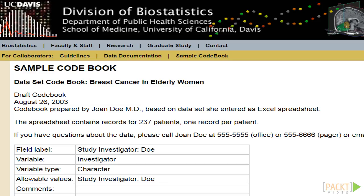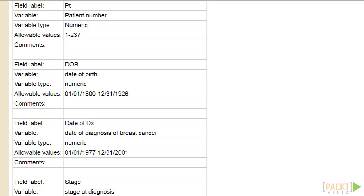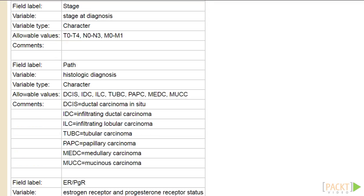The University of California Biostatistics Division have published this sample codebook. It may be a sample, but it does give a very good example of what to expect. It is headed up as a study of breast cancer in elderly women. From the metadata, I can see that the allowable values for date of birth range from January 1st, 1800 to December 31st, 1926. From the same codebook, we have a list of abbreviations and codes used within the data along with their definitions.